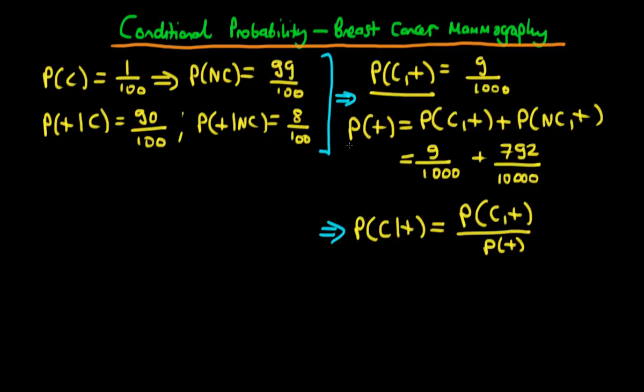We had pretty much worked out the marginal probability that an individual tests positive. This is an individual lady drawn at random from a population of 40 to 50 year old women. This is the sum of these two terms: the probability that an individual has cancer and tests positive, and this other term which we worked out as 792 over 10,000. If we sum together these two terms, we get 882 over 10,000.